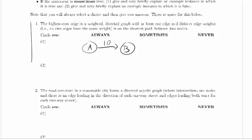So that would be it, yes, the highest cost edge in a weighted directed graph with at least one edge and distinct edge weights is on the shortest path between two nodes. So this is an example of a case where it does happen, which means never is not true.